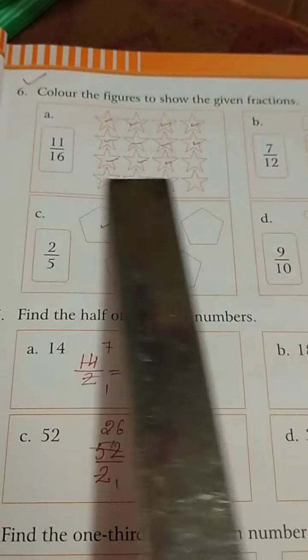Here 7 by 12 means 7 in 7 flags. These 1, 2, 3, 4, 5, 6, 7, we have to color only in 7 boxes and total boxes are 12.